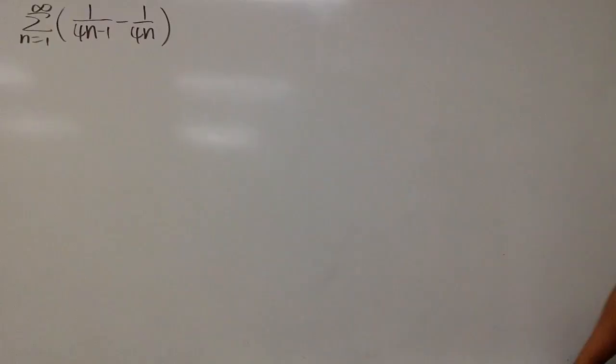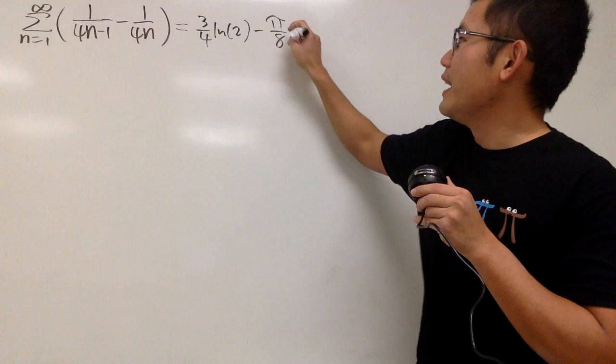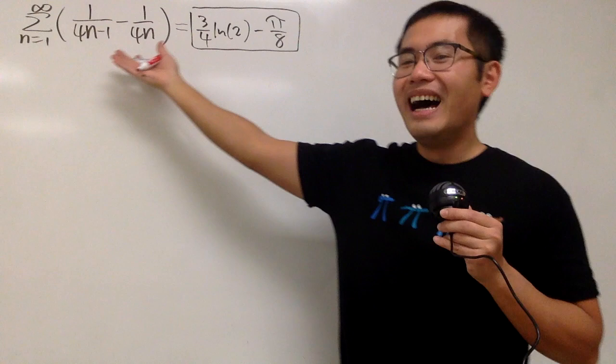Hopefully you guys had the time to try it. Now let me tell you that this right here is equal to 3 over 4 ln2 minus pi over 8 like this. A pretty crazy looking answer, right? Anyway, I got this question from Daily Math in his new book, so go ahead and check that out. I will have the link in the description for your convenience.